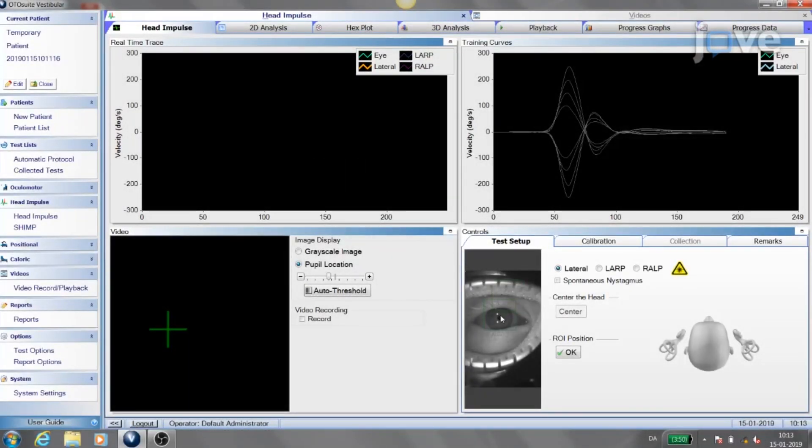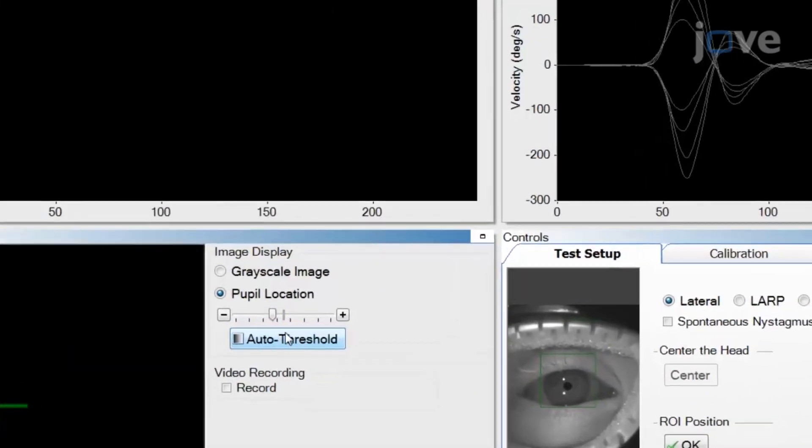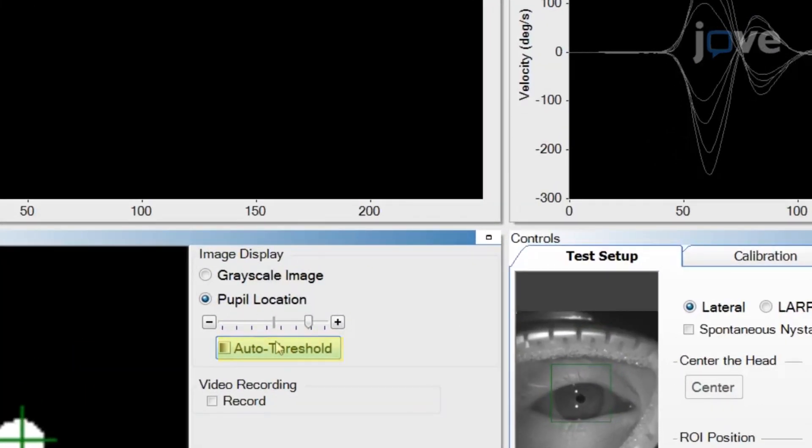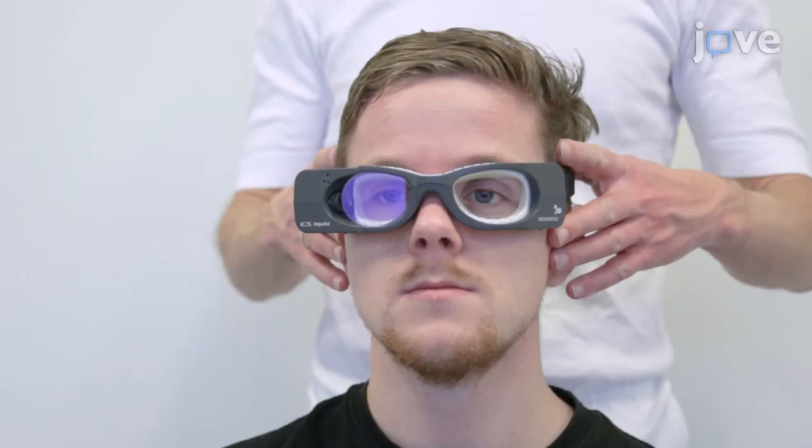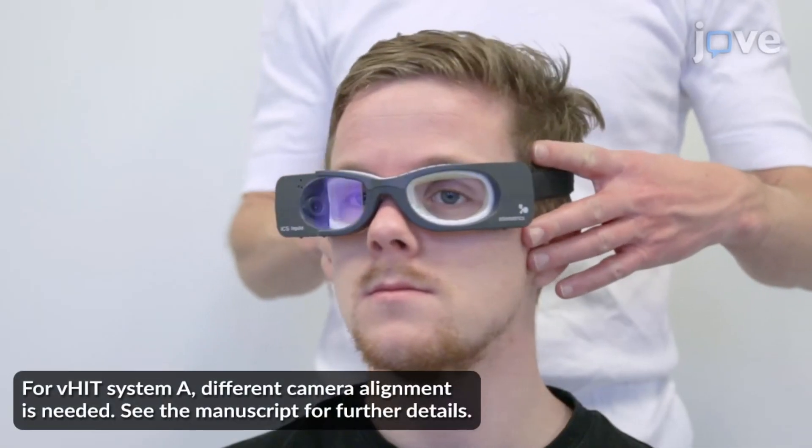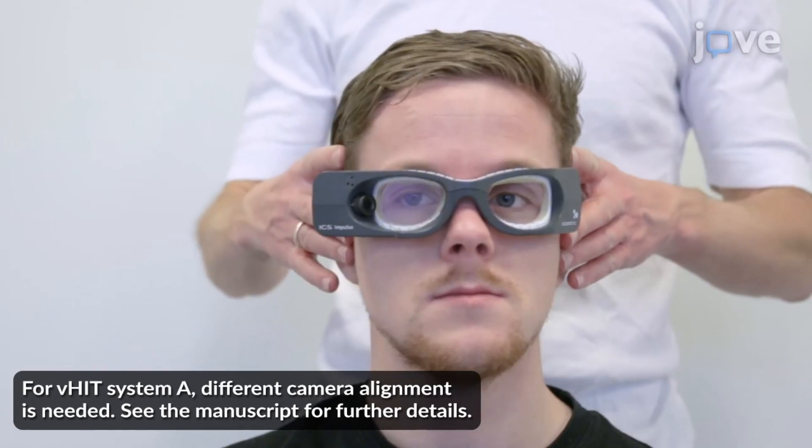For VHIT system B, position the region of interest around the pupil and select Auto Threshold on the laptop. Finally, assess the tracking of the pupil by having the participant make short horizontal head movements prior to initiation of the test.